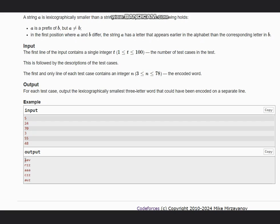For 24, we have AAV, as A has index 1, A has 1 again, so we are left with 22 and 22 is V. For 70, we have RZZ. In case of 3, we can have triple A. In case of 55, we can have CZZ. And in case of 48, we can have AUZ.